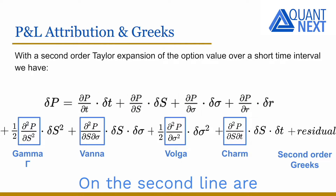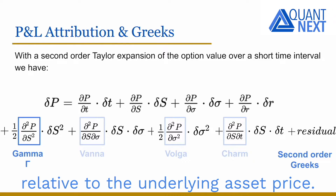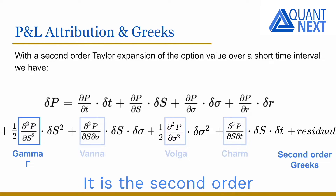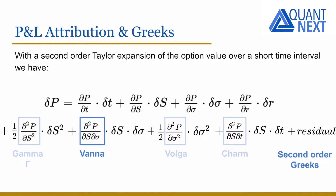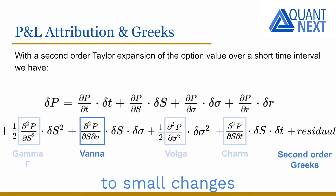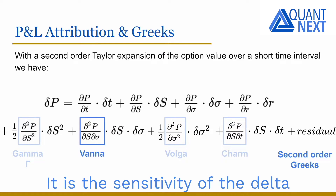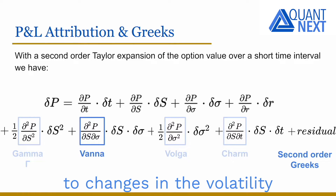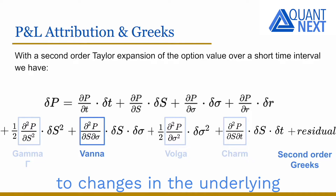The most important second order Greeks are as follows. Gamma measures the rate of change of the delta of an option relative to the underlying asset price. It is the second order partial derivative of the value of the option with respect to the price of the underlying asset. Vanna measures the option sensitivity to small changes in the underlying asset price and volatility. It is the sensitivity of the delta to changes in the volatility, or the sensitivity of the vega to changes in the underlying asset price.